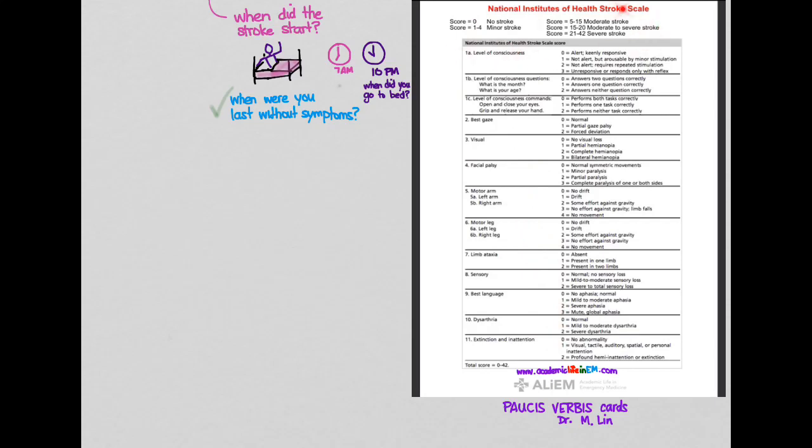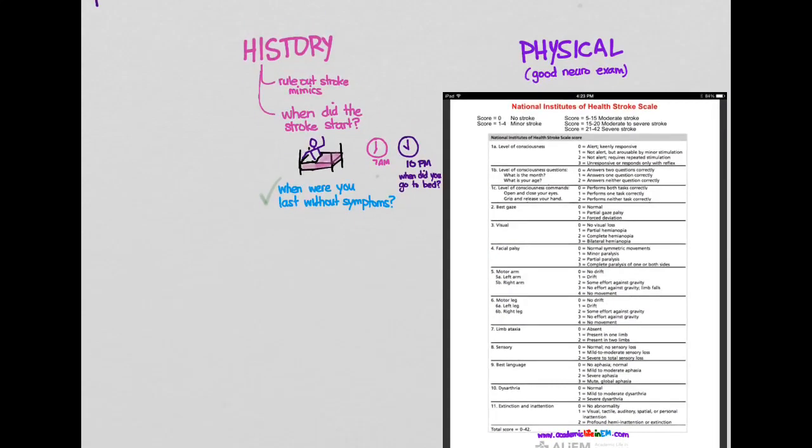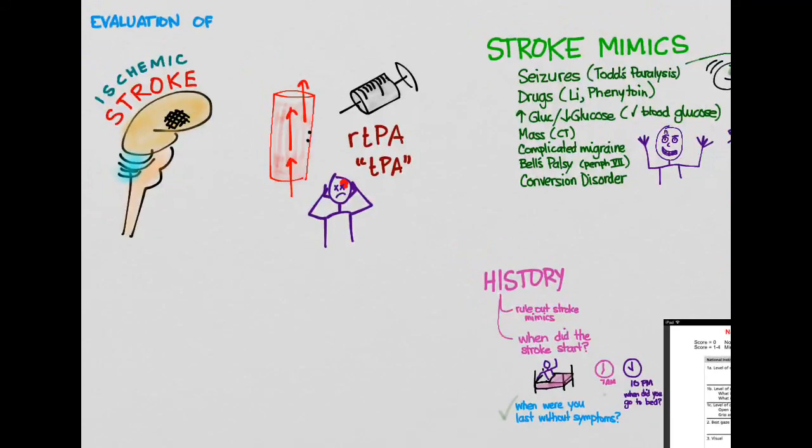And then score your patient on the severity of their stroke on the NIH stroke scale. So that takes us quickly through a look at the history and physical that you want to do on patients who you think are presenting with a stroke. And remember, you want to hit the Stroke Mimics and check out the Paucis Verbis Cards. Okay, thank you for watching, and we'll see you in the next video.